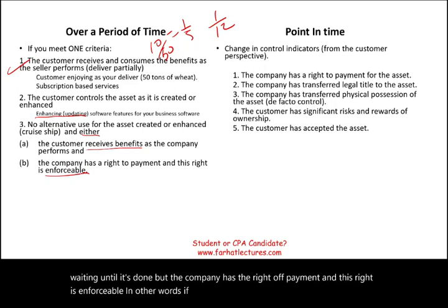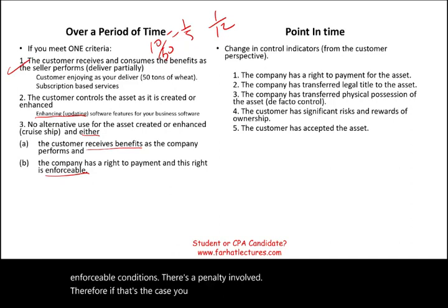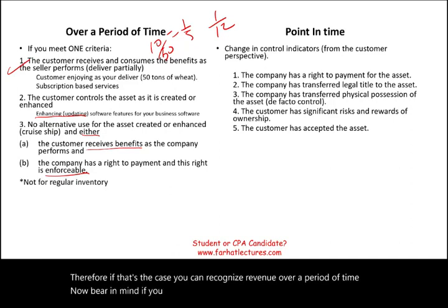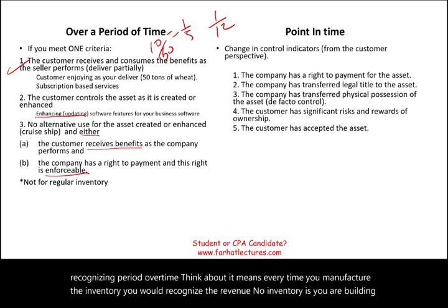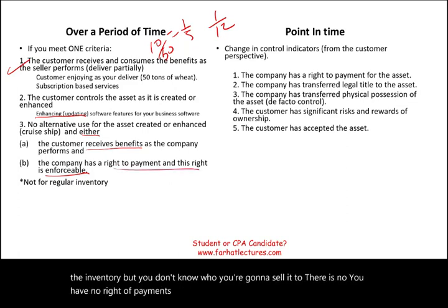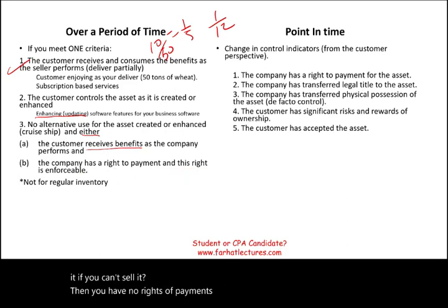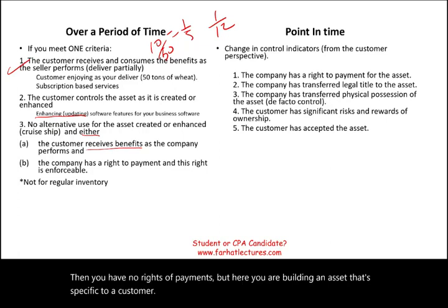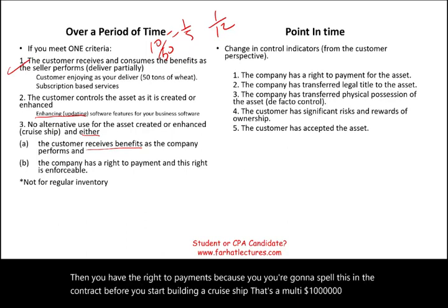Bear in mind: if you are building regular inventory, you cannot use over-time recognition. You're building inventory without knowing who you'll sell it to — there's no right to payment. But here, you are building an asset specific to a customer, so the right to payment is spelled out in the contract before you even start building something like a multi-million dollar cruise ship.